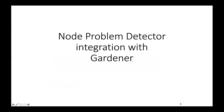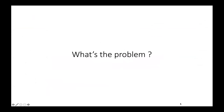I want to talk a little bit about the node problem detector and the recent integration of it with Gardener. Before we get into these, what was the exact problem that we faced? If you're aware of the ecosystem of Gardener and machine controller manager, you would know that MCM earlier was able to replace machines which are unhealthy — machines where the kubelet is not ready for 10 minutes, or disk pressure is high for 10 minutes, and so on.